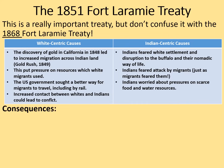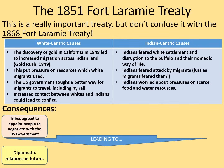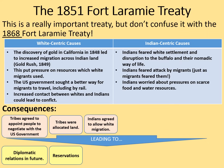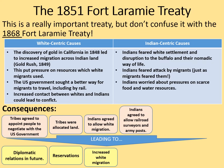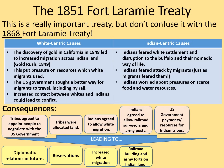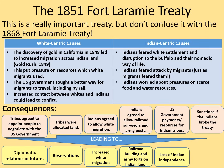Here are the consequences of the Fort Laramie Treaty. Firstly, tribes agreed to appoint people to negotiate with the US government, leading to diplomatic relations in the future. Tribes were allocated land, which led to reservations. The Indians agreed to allow white migration, leading to increased white migration into their land. They also agreed to allow railroad surveyors and army posts, which led to railroad building and army forts on Indian land. The US government agreed to payments and resources for Indian tribes, which led to a loss of Indian independence. There were also sanctions if the Indians broke the treaty — conflict was the result, as keeping to the treaty was not always possible or wanted.